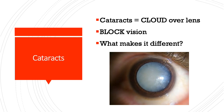Think of cataracts as a cloud over your lens. Cataracts block your vision because they are literally an obstruction preventing the image from getting through your eye to the optic nerve and then to your brain. That cloud is just a bunch of proteins that have built up with age. Cataracts are a little different because of some of the symptoms patients may have.